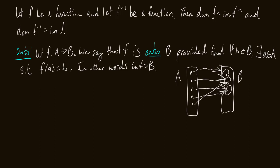Just as with one-to-one we said the size of A must be less than or equal to B, if f mapping A to B is onto B, then surely the size of A must be greater than or equal to the size of B. We need at least as many elements in A as in B to cover all of B. You can't be onto if the size of A is less than B — you don't have enough elements.